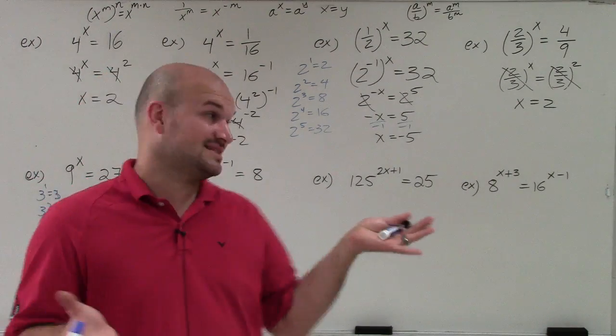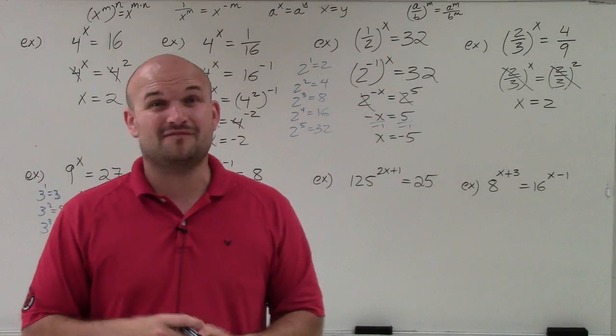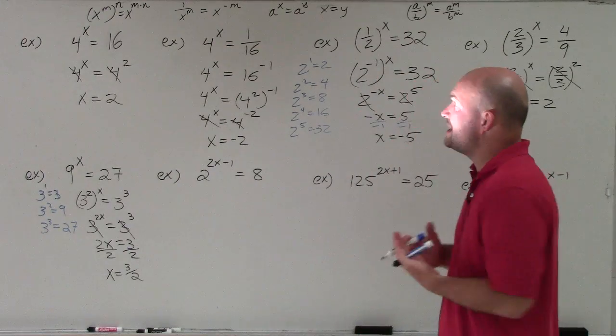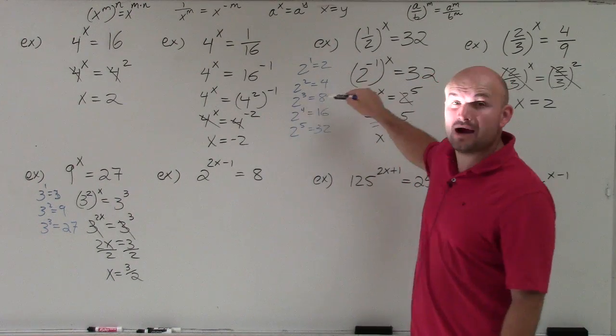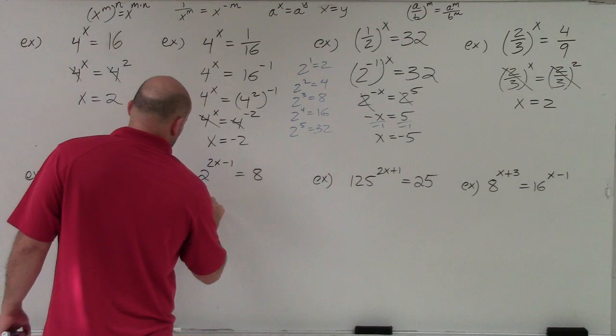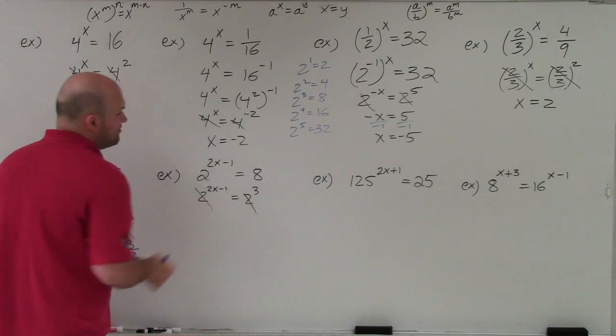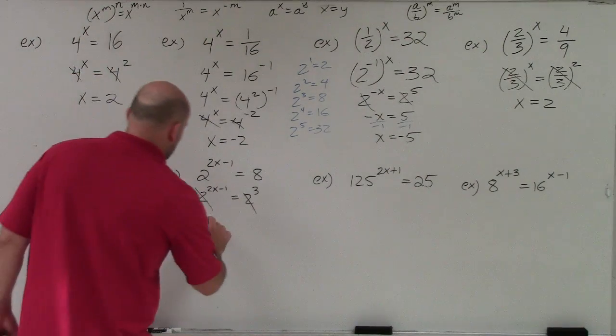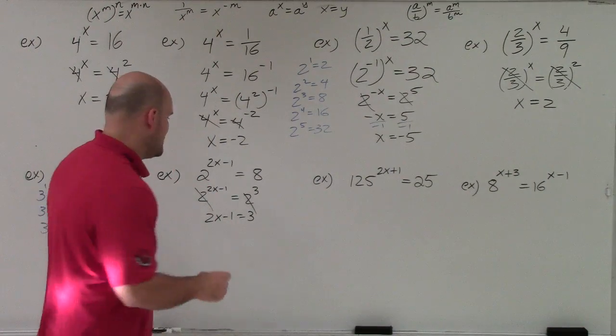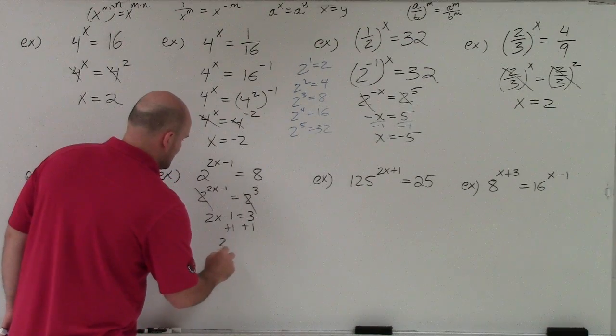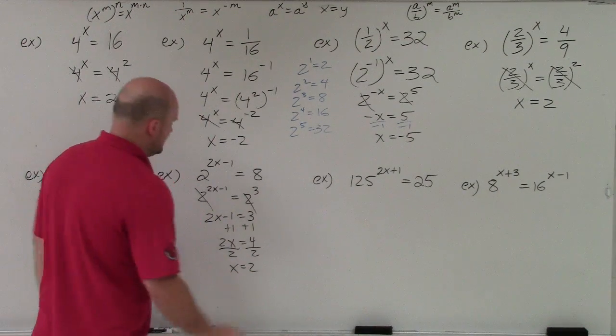In this next case, now we just have an exponent that's not just, before I've been using just x and it's been pretty simple, but now we can also have expressions as our exponents. But it's not really going to matter as much. In this case, I see 2 and I see 8. I know that I can raise 2 to the third power and that's going to give me 8. So I just have 2 raised to the 2x minus 1 equals 2 cubed. Now, whenever your bases are exactly the same, the powers are just equal to each other. So now I have a two-step equation that I can just solve based on my understanding of solving equations.